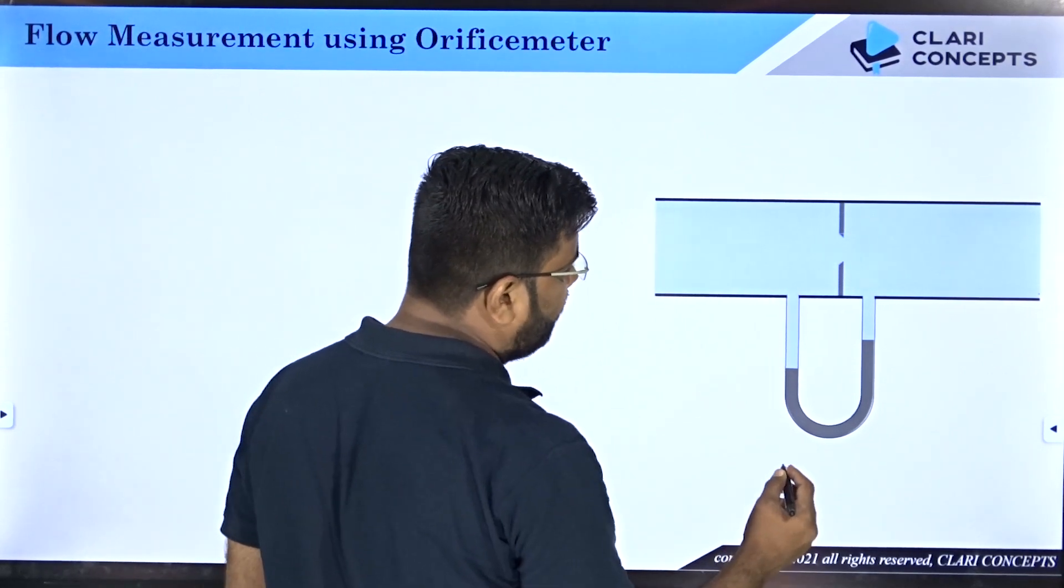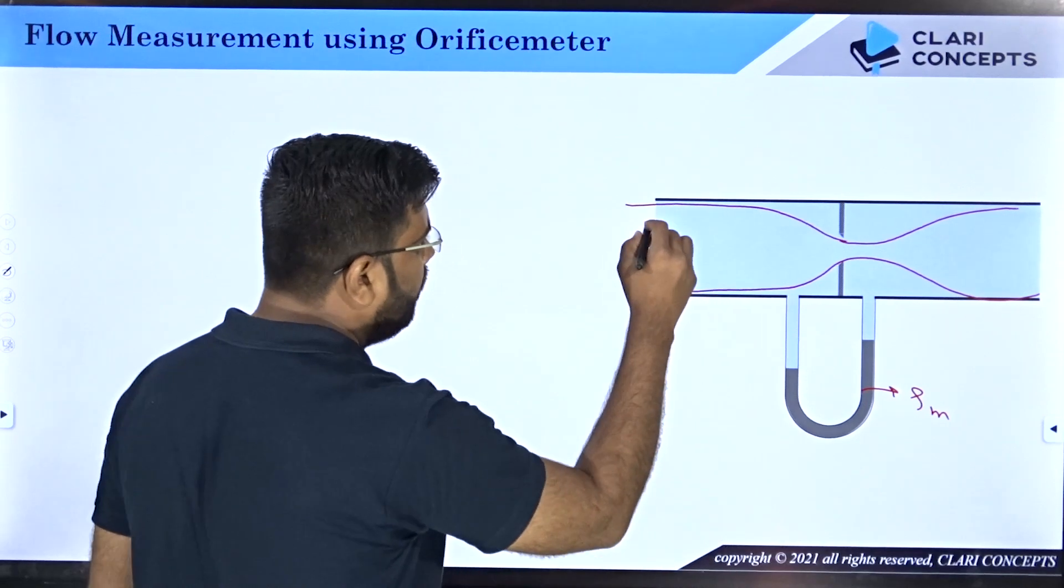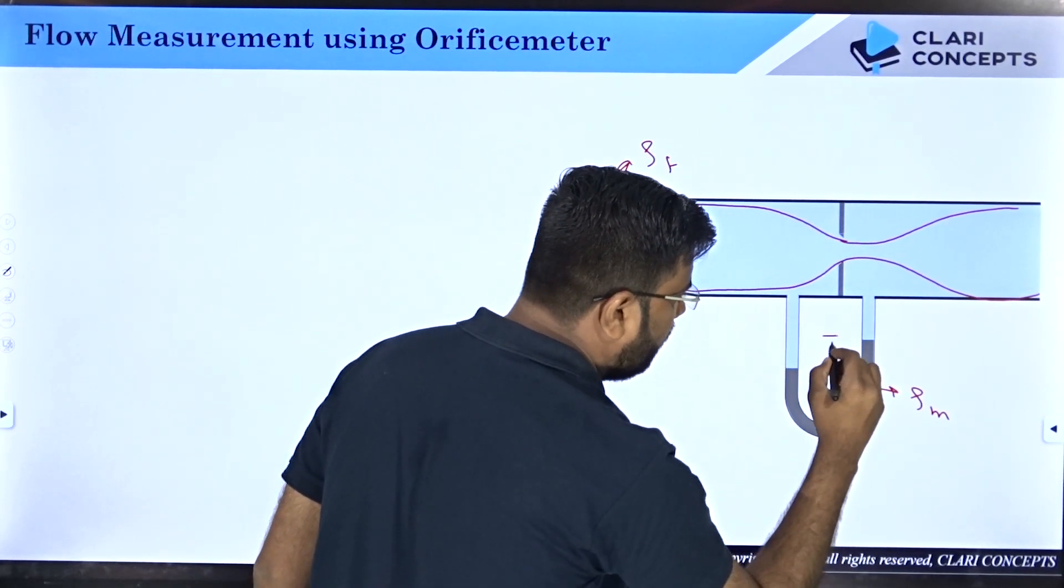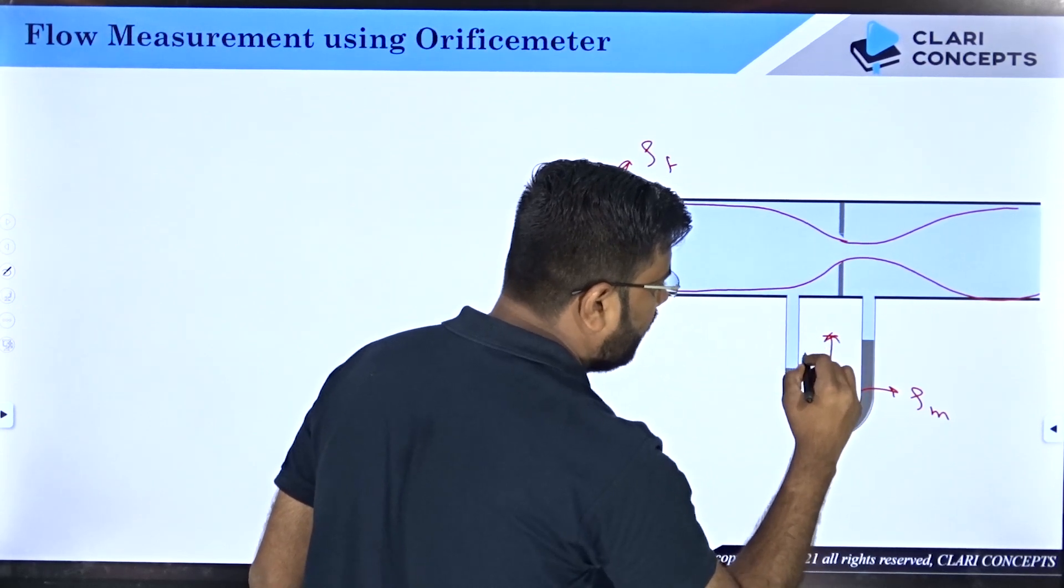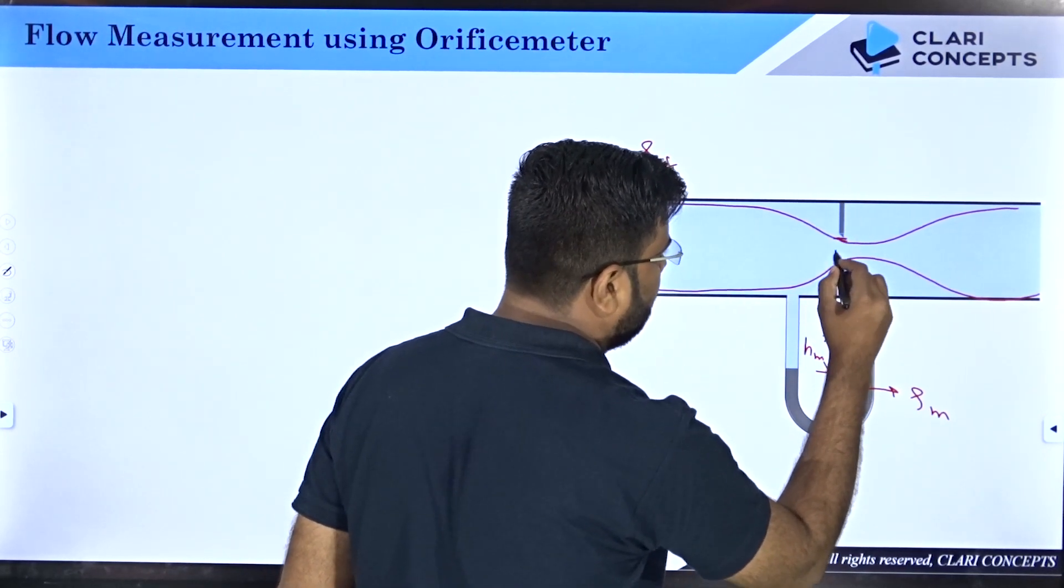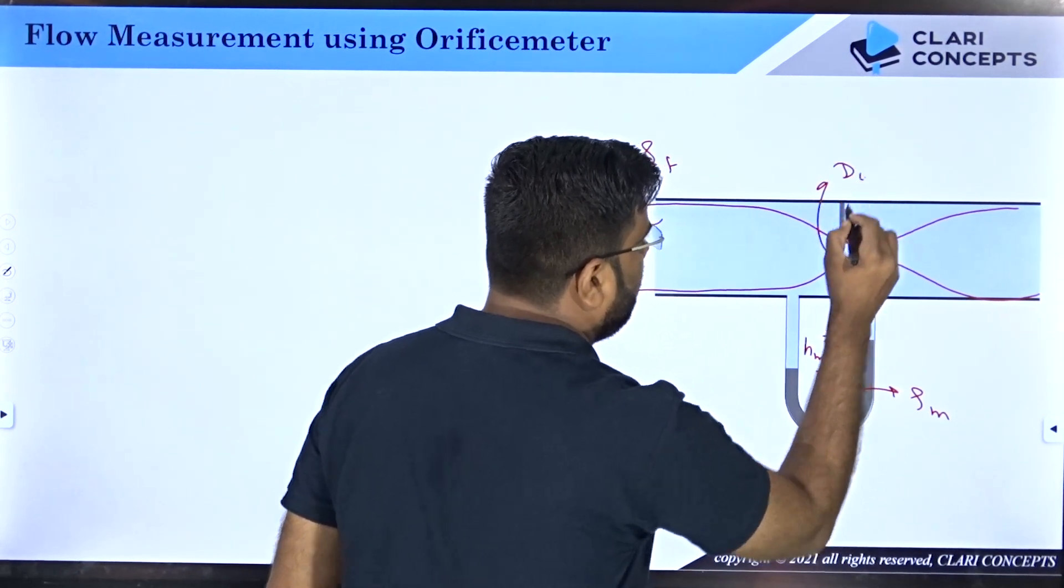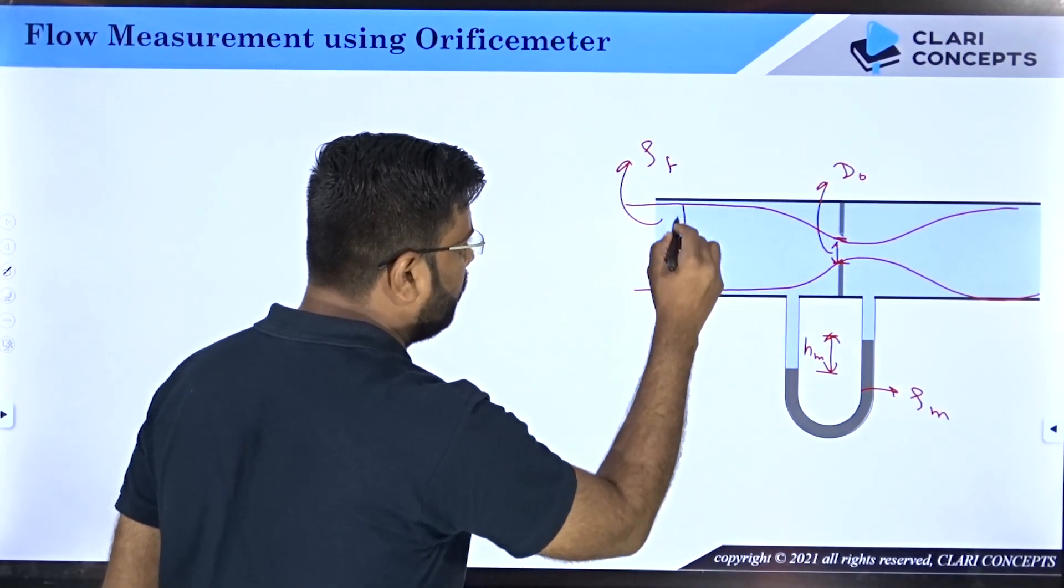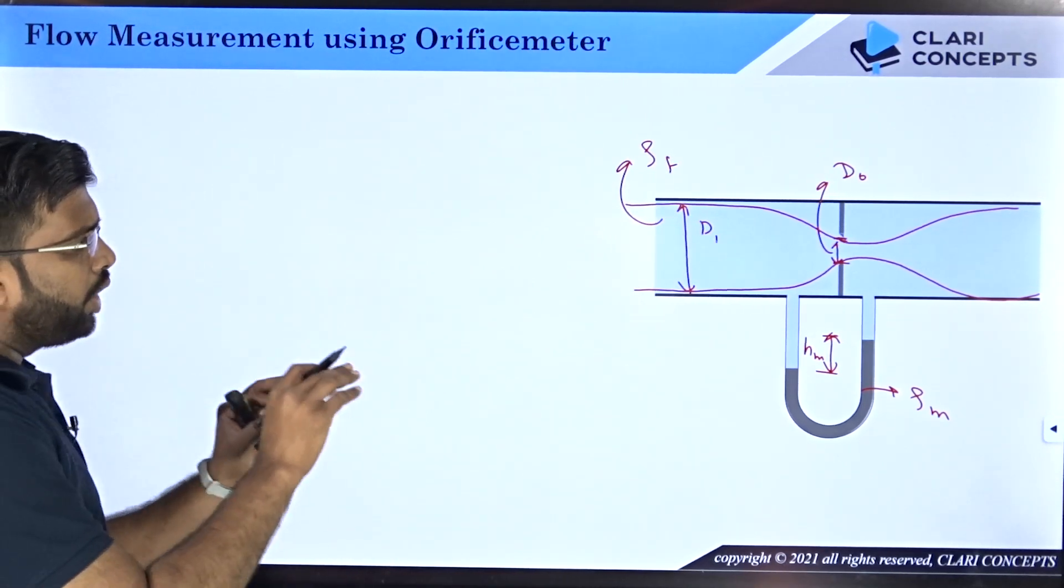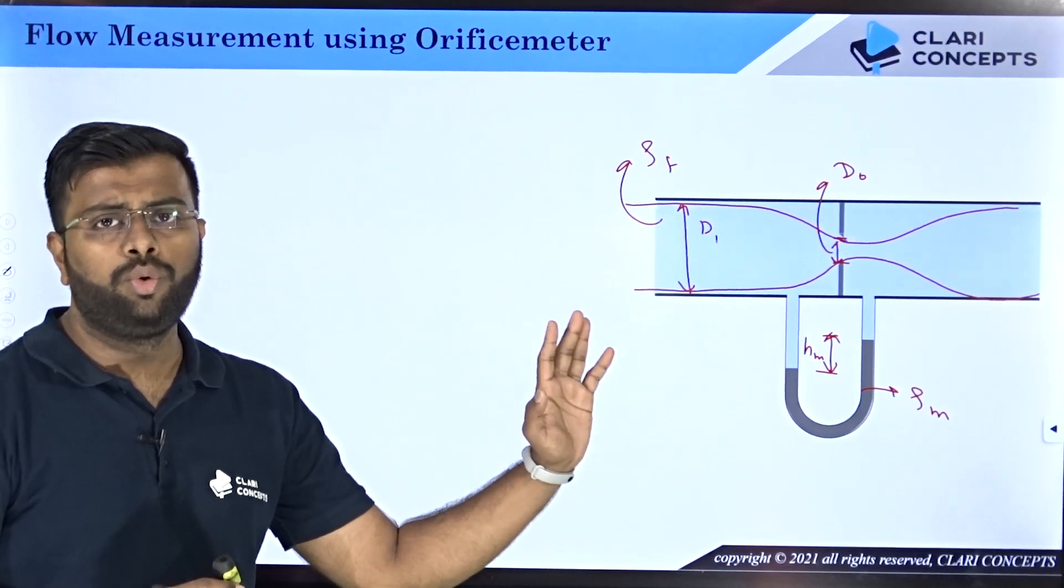Let's say you have this kind of arrangement where manometric fluid density is ρ_m and the fluid flowing through the pipe has density ρ_f. This manometric difference is h_m. The diameter of orifice, the minimal diameter of orifice is d_o, and the diameter of main pipe is d_1.